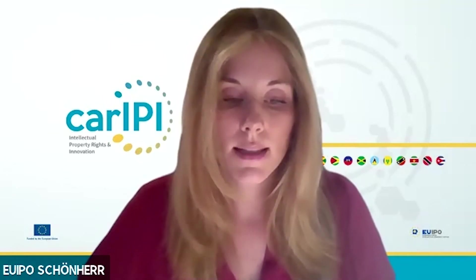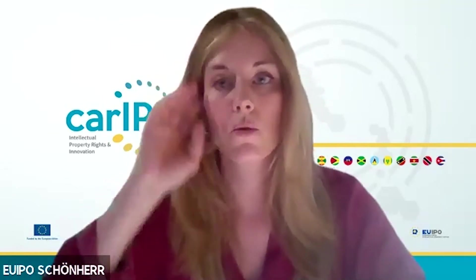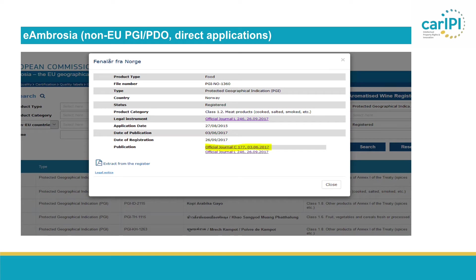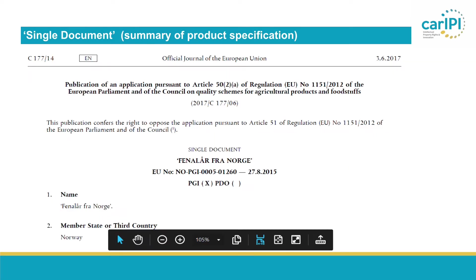Under the EU system, the European Commission approves a so-called single document, which is a summary of the product specification. On e-Ambrosia, as you can see in the slideshow, you will find a link to that single document. Here you can see an excerpt — an extract of a single document which is a summary of the product specification.